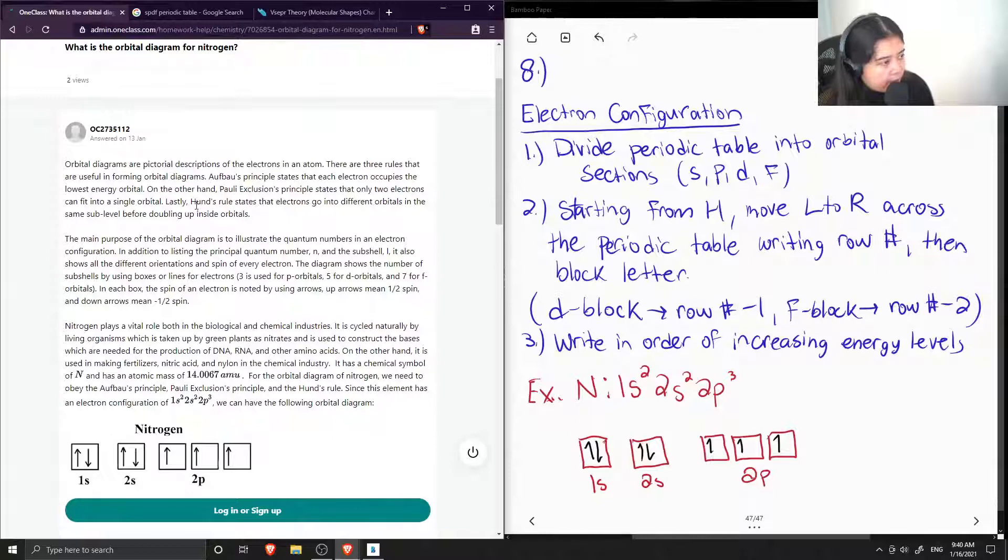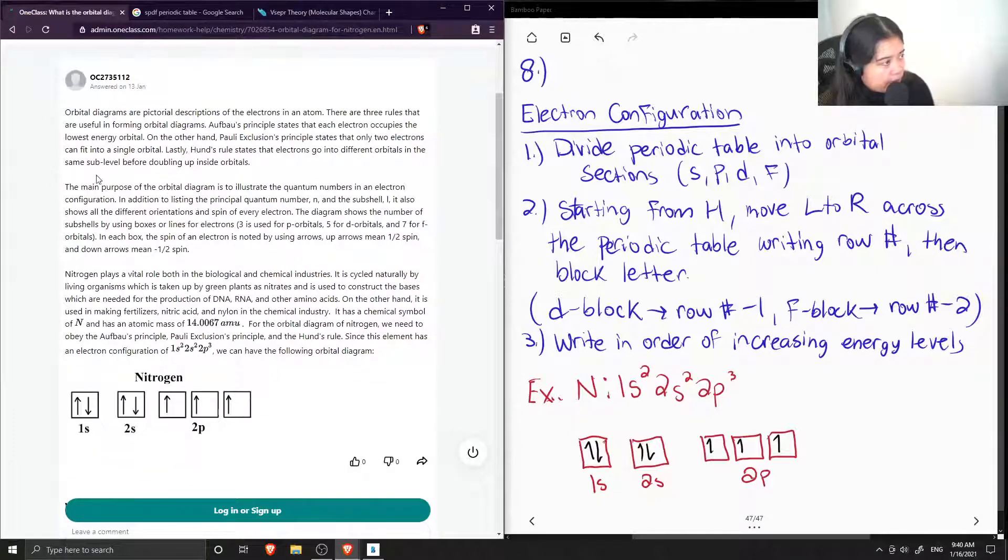The main purpose of the orbital diagram is to illustrate the quantum numbers in an electron configuration. In addition to listing the principal quantum number n and the subshell l, it also shows all the different orientations and spin of each electron.